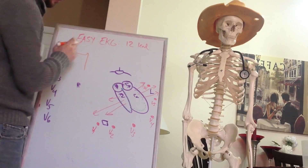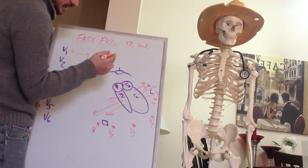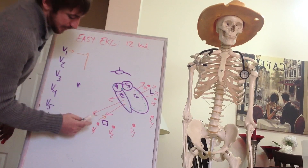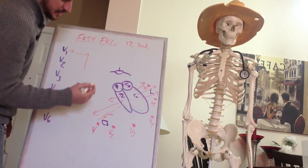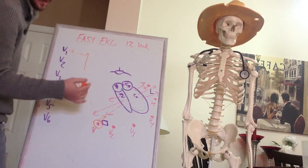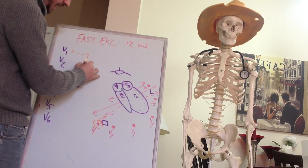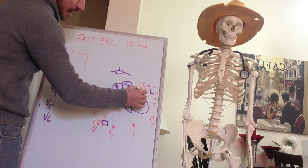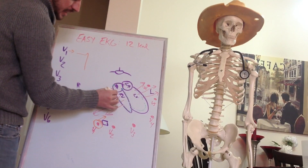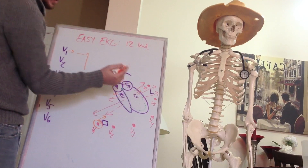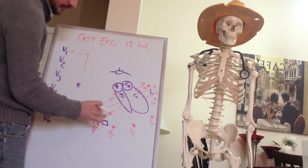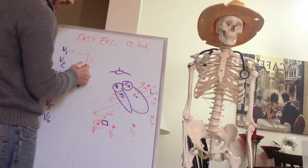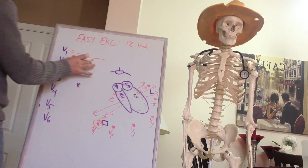Why do we have a downward spike in V1? When we have a depolarization going away from a lead, it's going to produce a negative deflection. The left ventricle's net depolarization vector points away from V1. When it repolarizes, repolarization goes from outside to inside, so we get a smaller positive upstroke back up. That is V1.